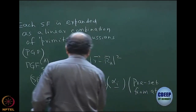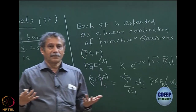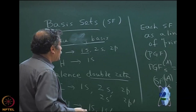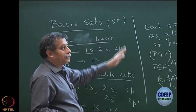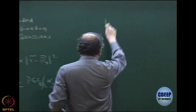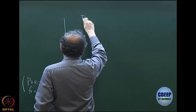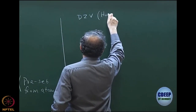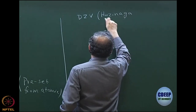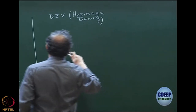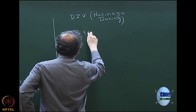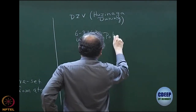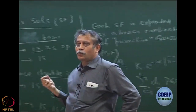Before going forward to further basis sets, let us look at two particular basis sets: the double zeta valence of Huzinaga-Dunning, and the 6-31G, 4-31G, 3-21G type basis sets by Pople. I will try to explain these two examples. There may be many many basis sets, but these are the important ones to understand.